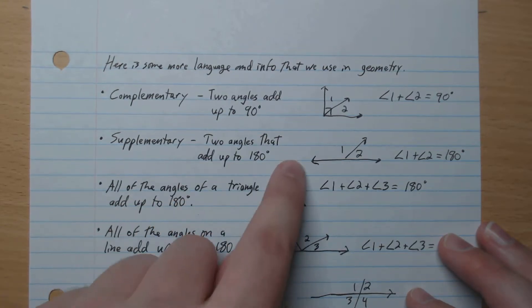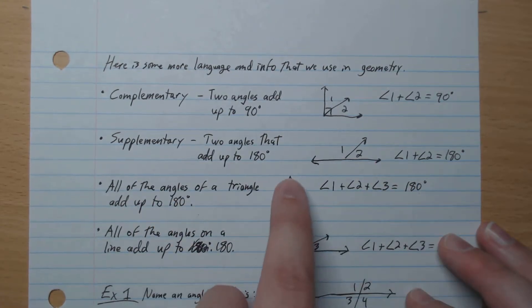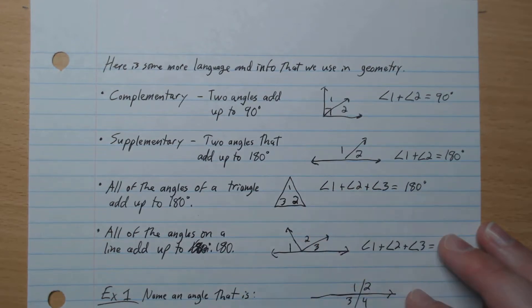So all of the angles of a triangle add up to 180. So angles 1, 2, 3 add up to 180.